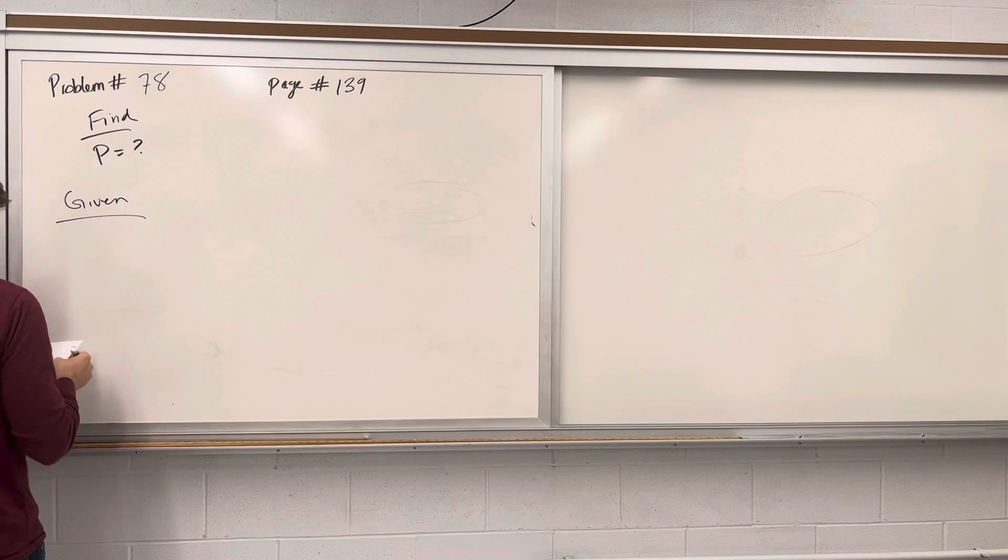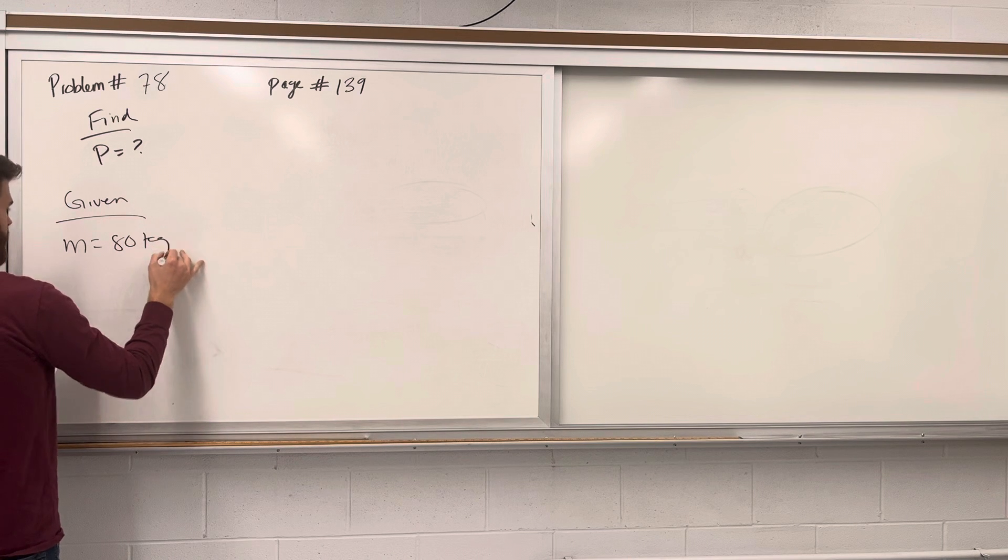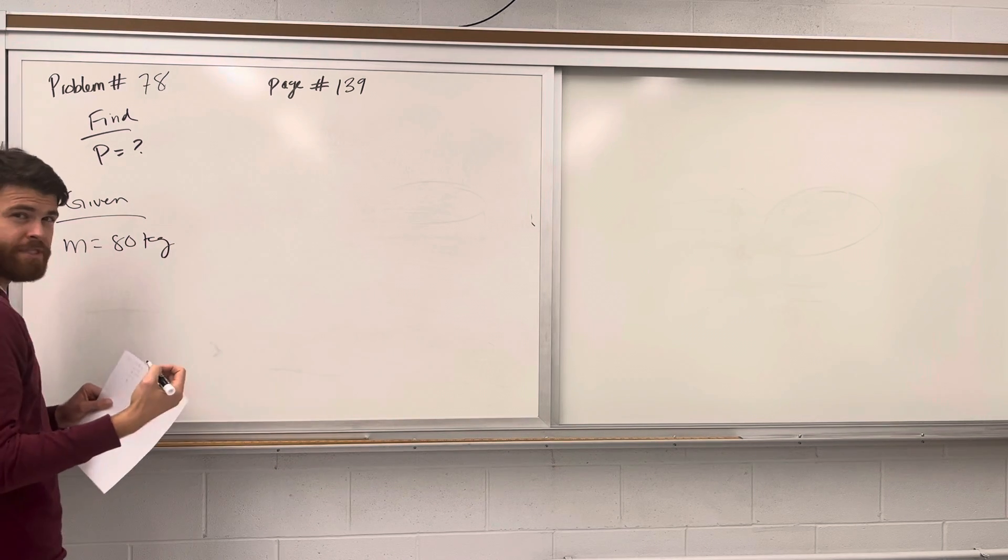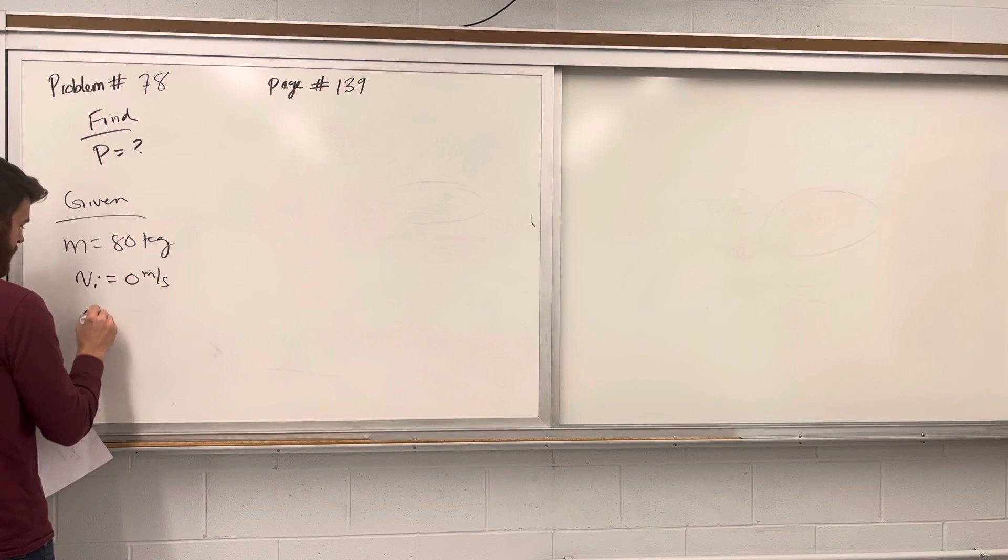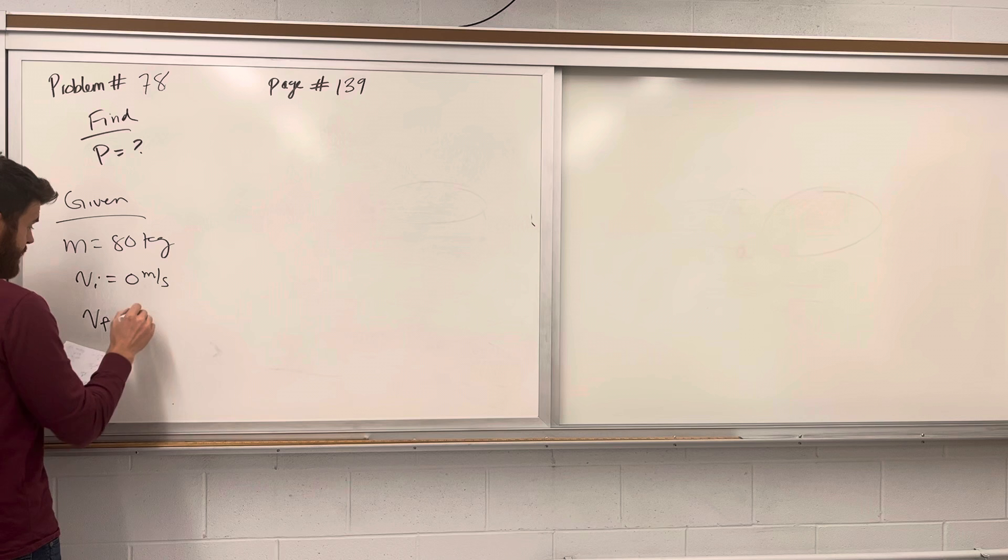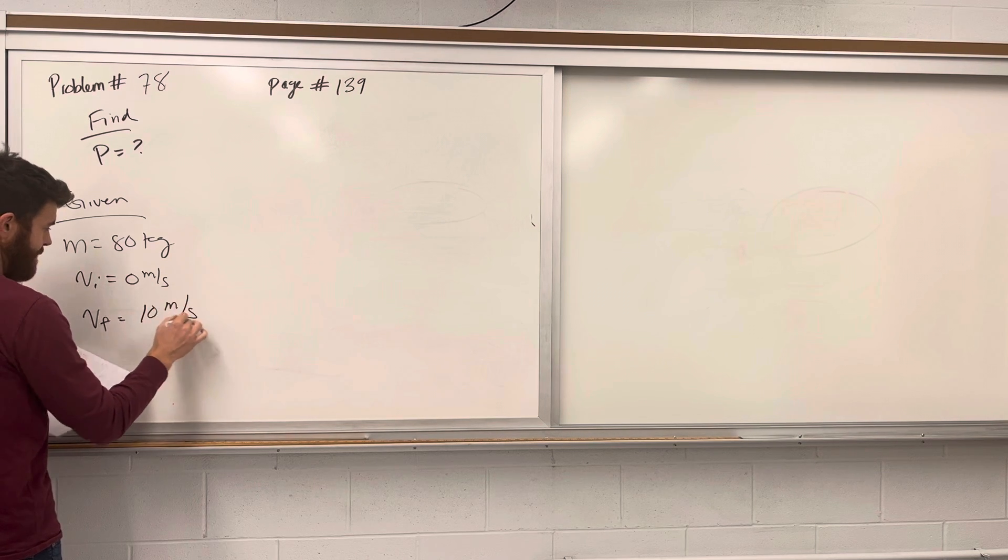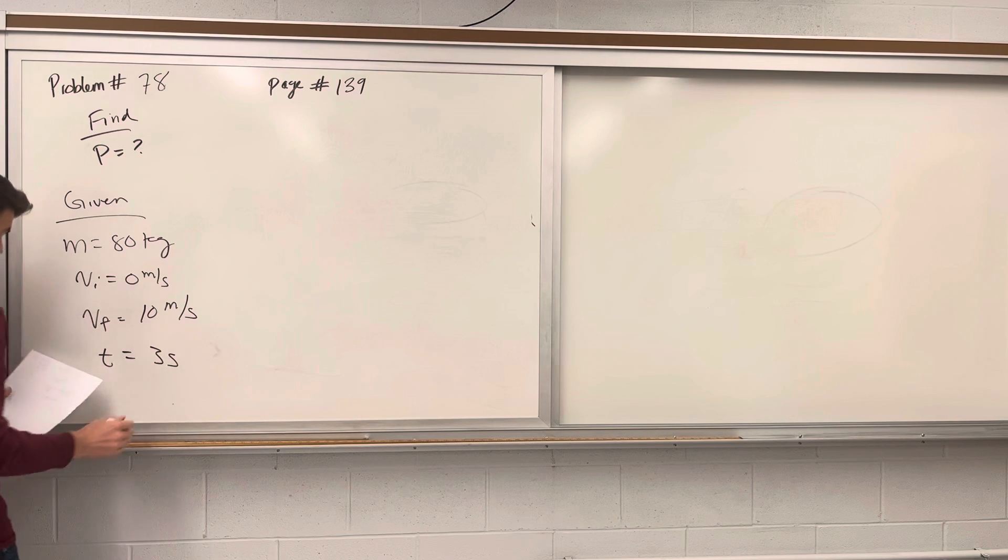We're given the mass: the sprinter is 80 kilograms. They start from a standing start, so their initial velocity is 0 meters per second. They increase to a velocity of 10 meters per second, that's our final velocity, in a time interval of 3 seconds.